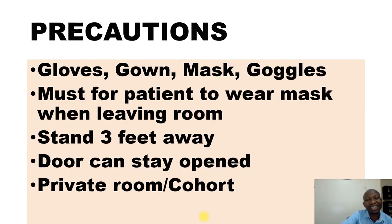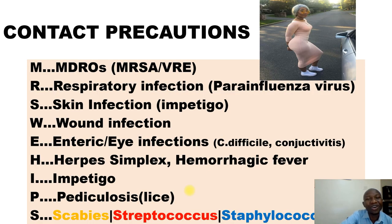For droplet precautions, you need gloves, gown, mask, and goggles. The patient should also wear a mask when leaving the room. You must stand three feet away, and the door can stay open. The patient should have a private room but can be cohorted with another person with the same disease.